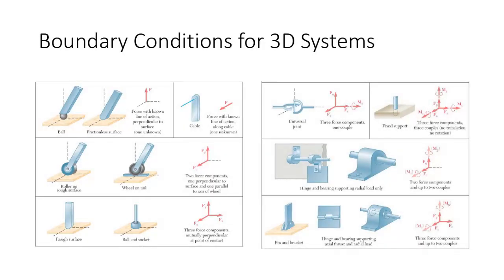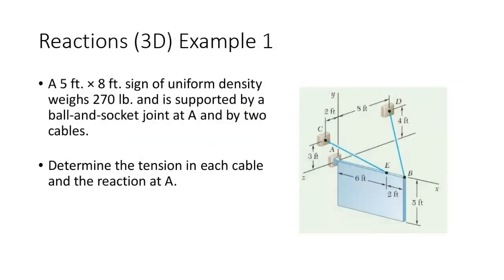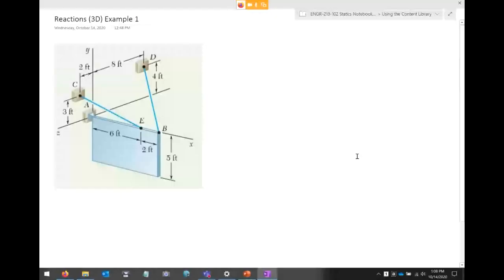Let me do a quick recap. We're going to extend our discussion of two dimensions into three dimensions. It's really all about identifying your unknown reactions at the supports and then applying the same strategies we would in two dimensions. So the support condition at A has three unknown components. The first thing I ought to do is write out my unknown components.